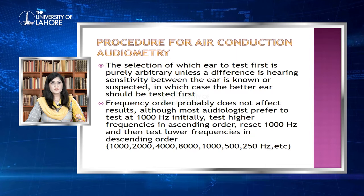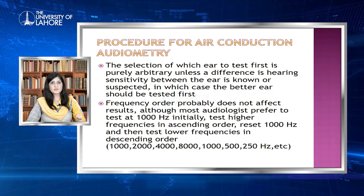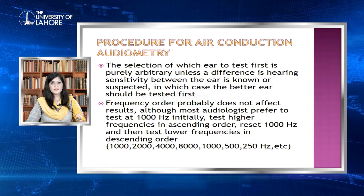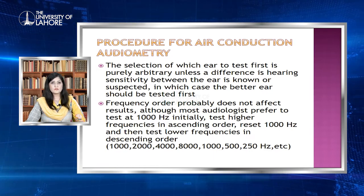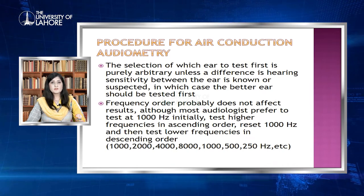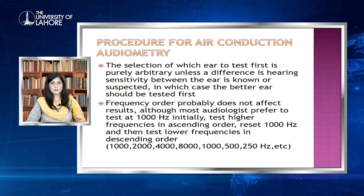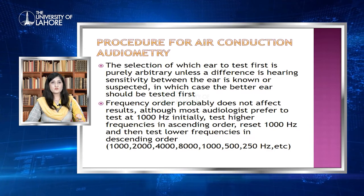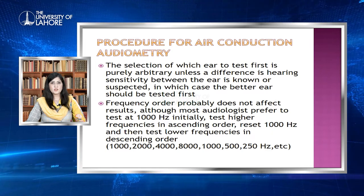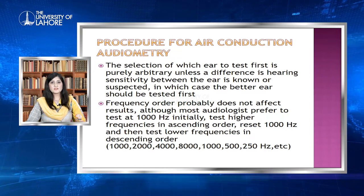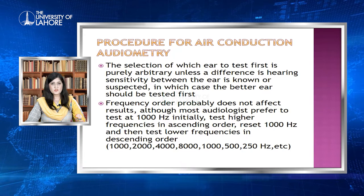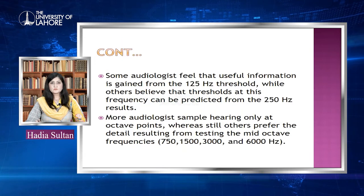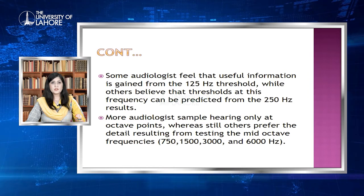Frequency order probably does not affect results. Although most audiologists prefer to test at 1000 Hz initially, then test higher frequencies in ascending order — 2000, 4000, 8000 Hz — then retest 1000 Hz, and then lower frequencies in descending order — 500 and 250 Hz. This is because 1000 Hz is the frequency most audible to humans and has high test reliability. Your results will not be affected by checking frequencies in a different order.